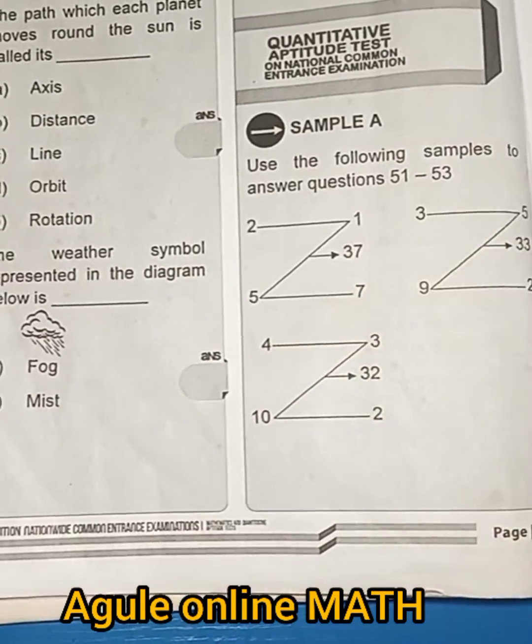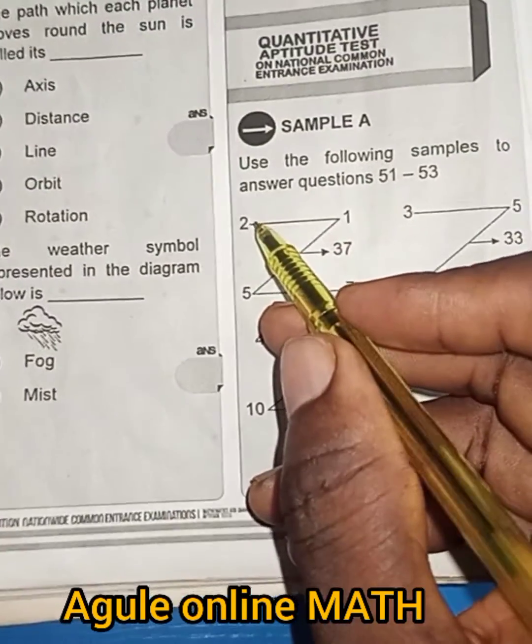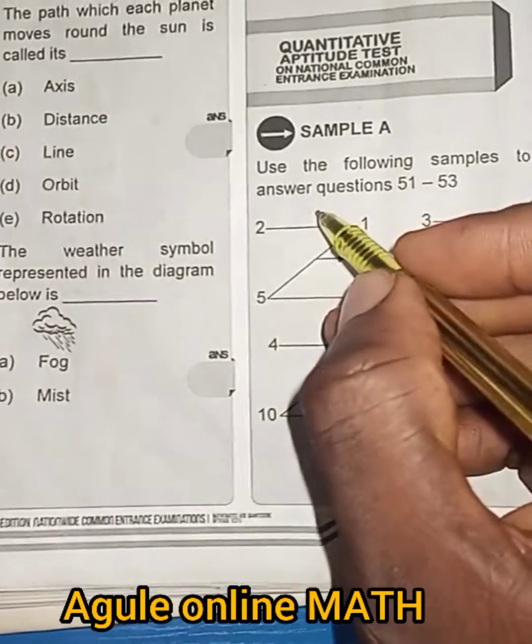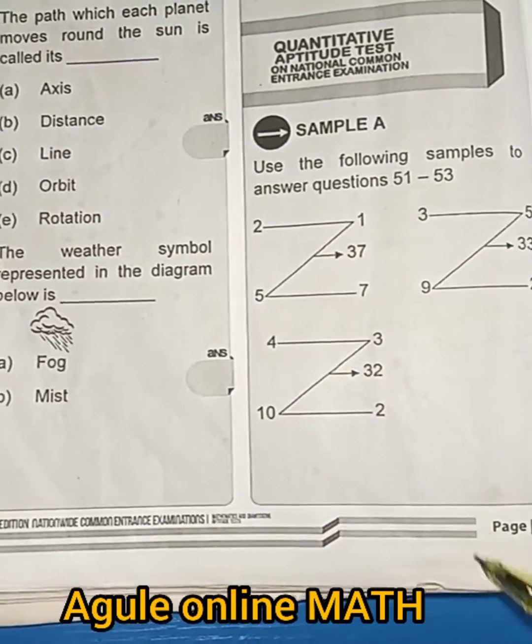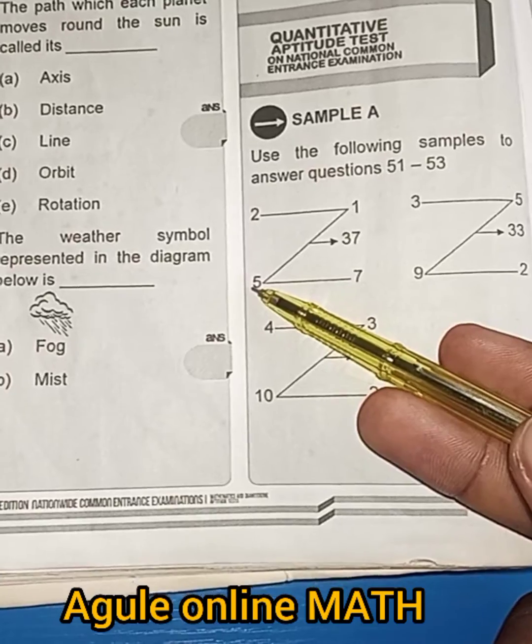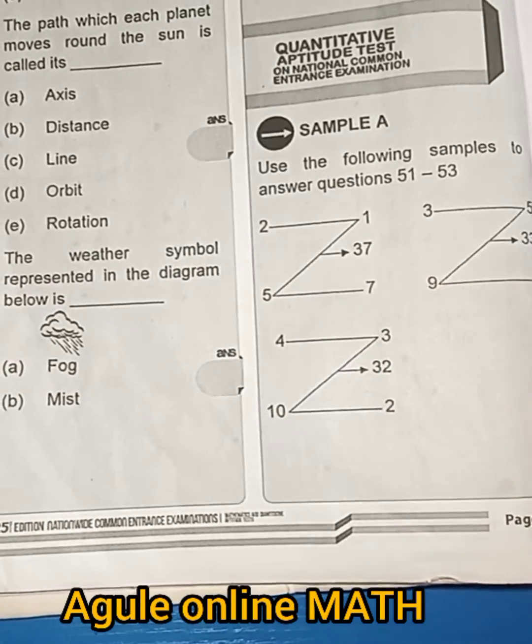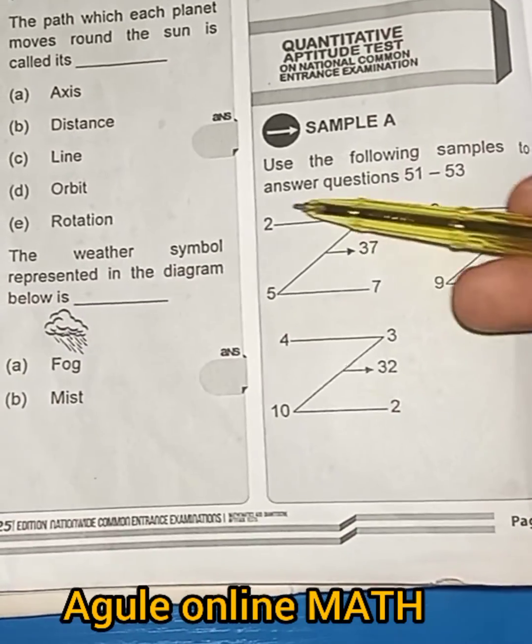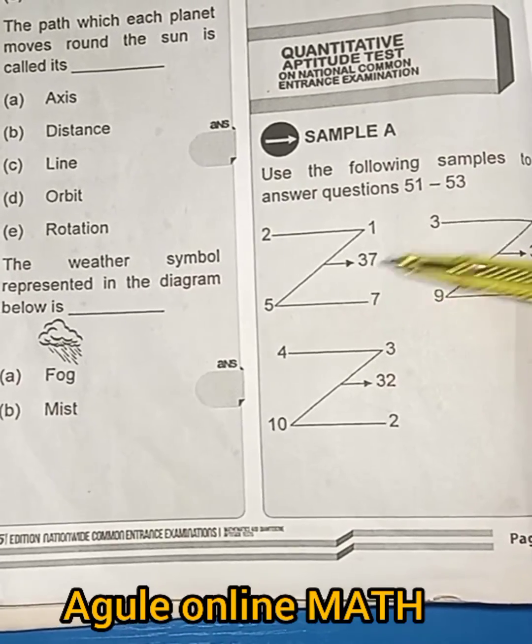If you want to get 37, you do 2 times 1 is 2. 5 times 7 is 35. So that 35 plus 2 will give you 37. That is all.